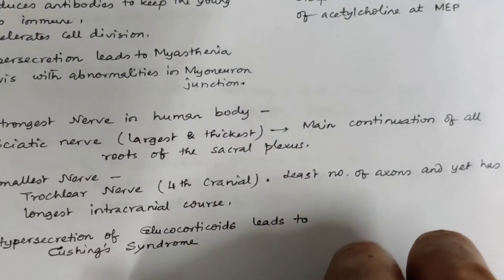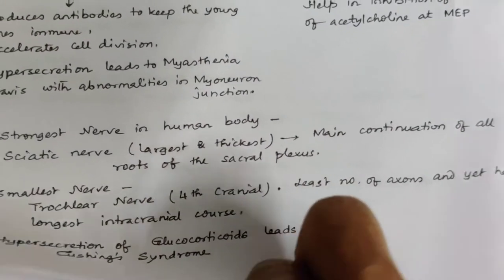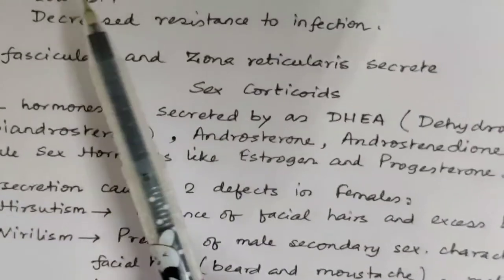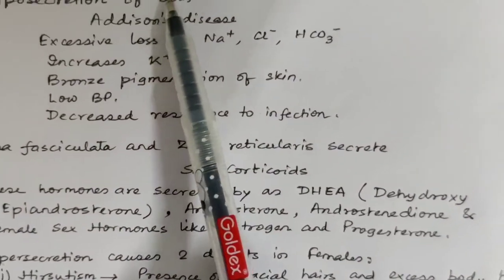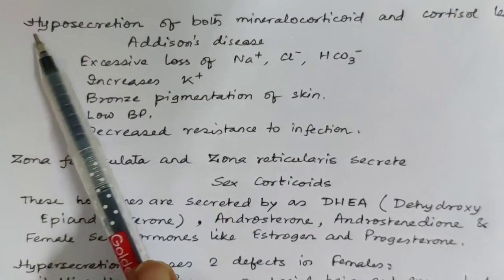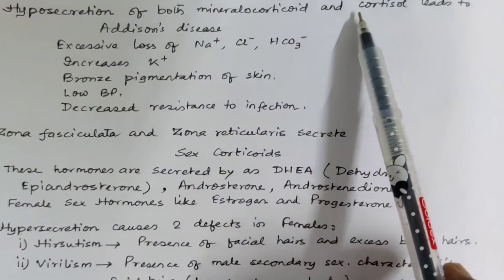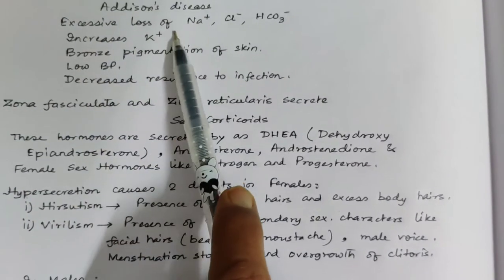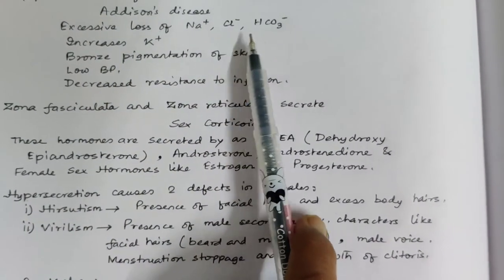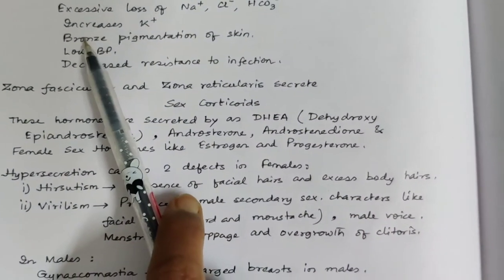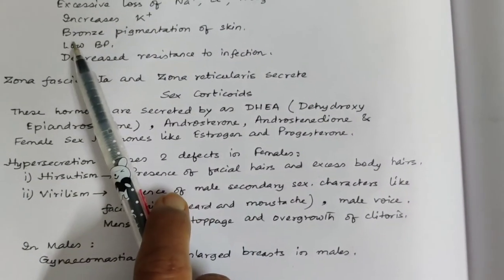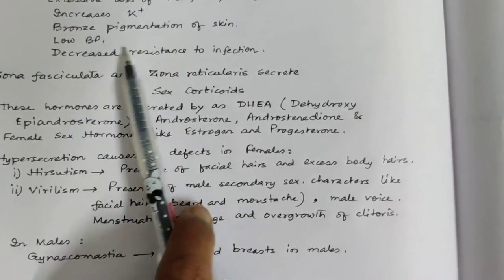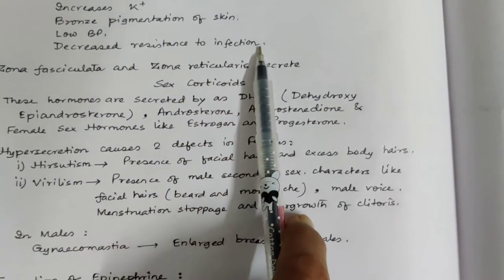Hyposecretion of glucocorticoids leads to Cushing's syndrome as discussed earlier. The hyposecretion of both mineralocorticoid and cortisol leads to Addison's disease, having excessive loss of sodium chloride and bicarbonate ions, increased potassium ions, bronze pigmentation of the skin, low BP, and decreased resistance to infection.